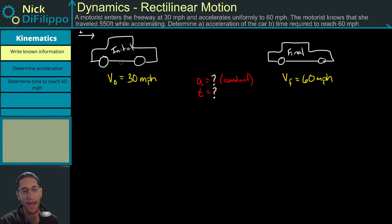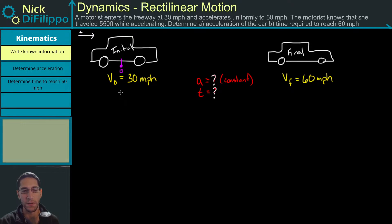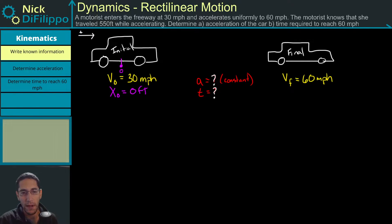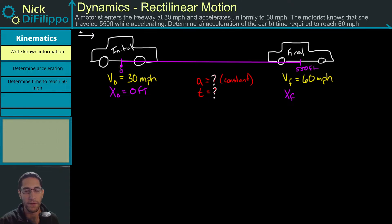We need to know we're dealing with particles right now, so we're going to treat this car like a particle. I'll say that the middle of this car is my zero position — my initial x position is going to be zero feet. It doesn't matter if you use the middle, front, or back of the car because as a particle it has no dimension. From the middle of the car we know this car has moved 550 feet, so my final position is 550 feet.